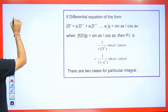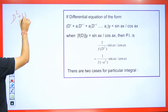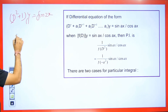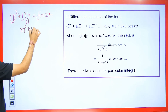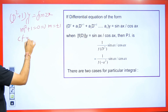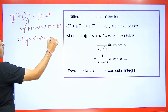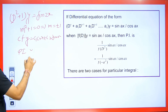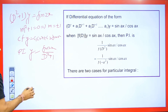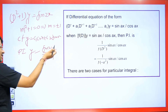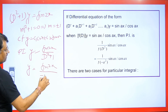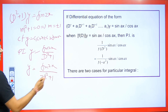If the question is given as (D² + 1)y = sin 2x and you are asked to solve it, we find the value of m: m² + 1 = 0, which gives m = ±i. Its CF will be y = c₁cos x + c₂sin x. For the particular integral, y = sin 2x / (D² + 1). Wherever it is D², we put the square of 2 and subtract. This becomes sin 2x / (−2² + 1) = sin 2x / (−4 + 1).